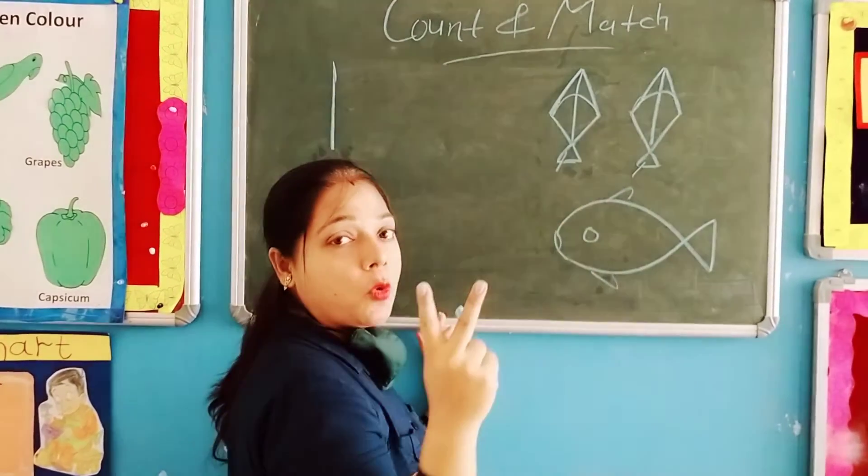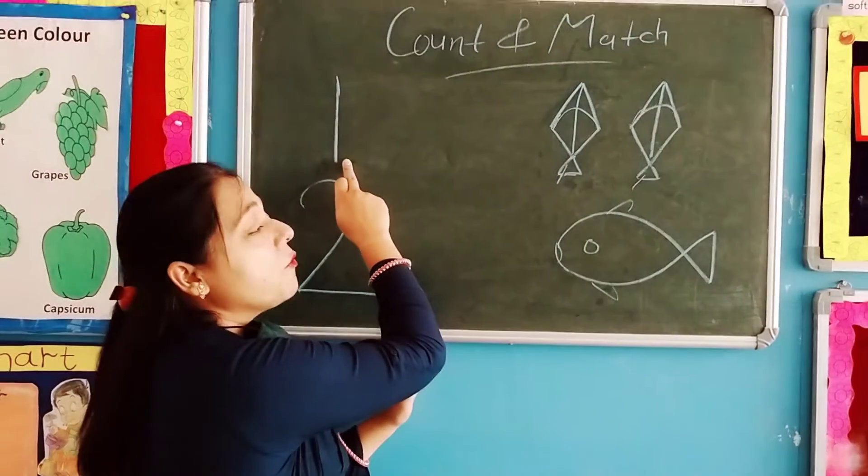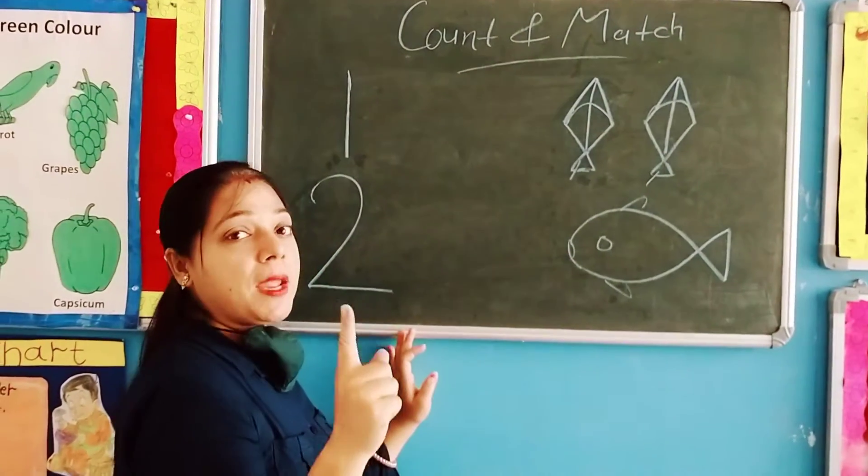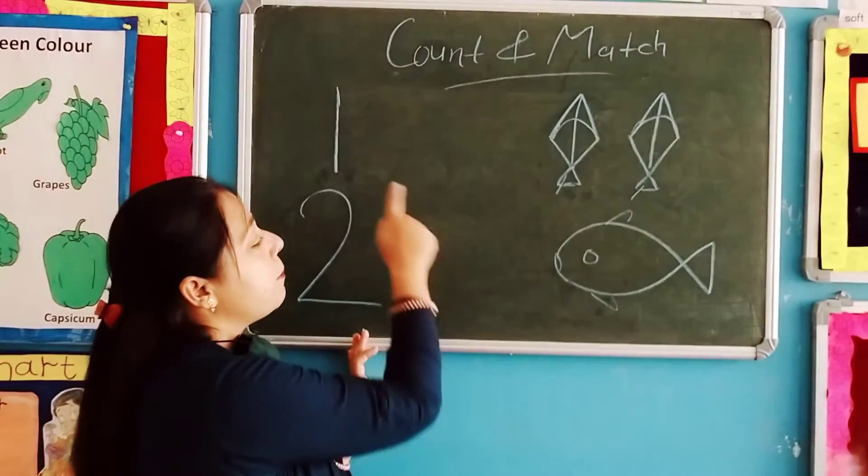Ye kitne kite hai? 2 kites. But ye kaun sa number hai? 1. So, hume is ko match nahi karenge. Hume only one pick, one object, one pick se hume is ko match karna hai.